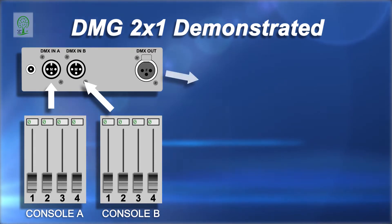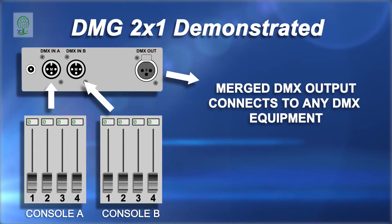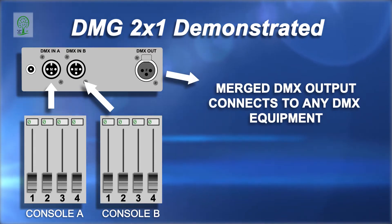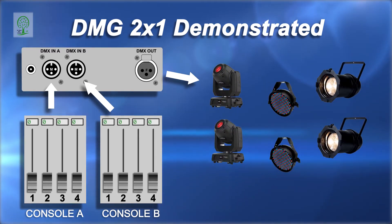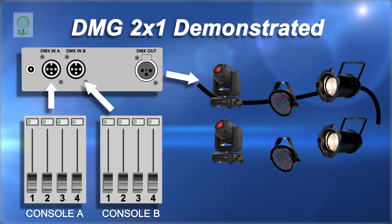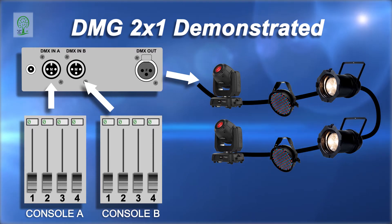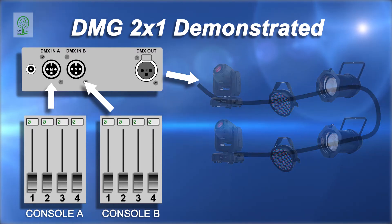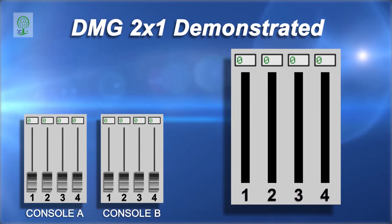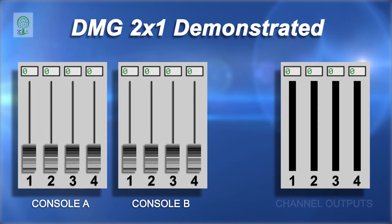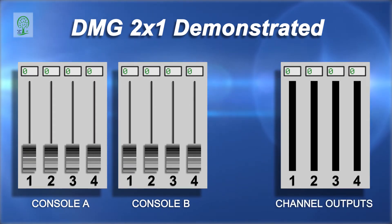The output is a combination of the two DMX universes merged into one DMX universe, that then connects to a daisy chain of equipment such as fixtures and moving heads. To show the merged output, a four-channel bar graph is shown to demonstrate the DMX output levels of each channel.